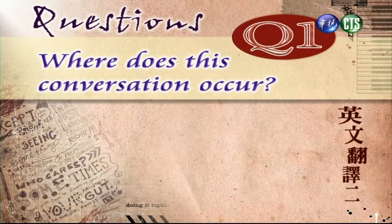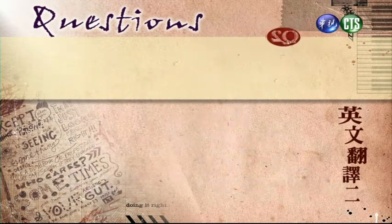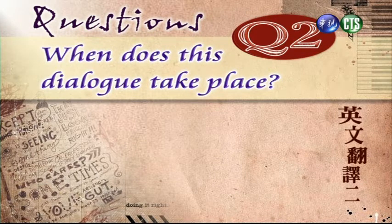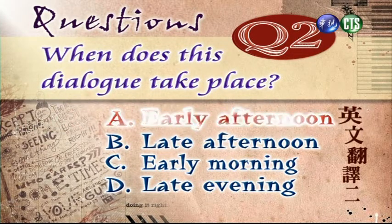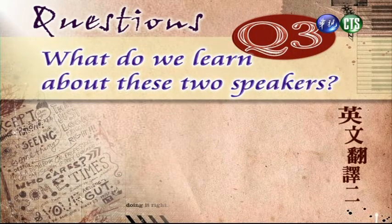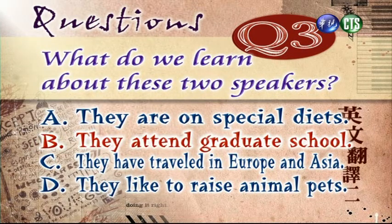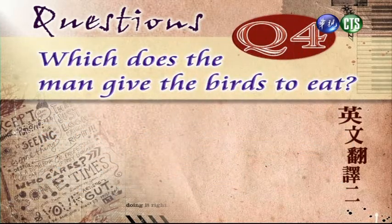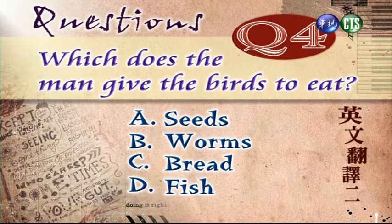Let's see what the problem is. Where does this conversation occur? A. Public Park. B. Railway Depot. C. Television Studio. D. University Campus. Answer: D, University Campus. Question 2: When does this dialogue take place? Early afternoon, late afternoon, early morning, late evening. Answer: Early afternoon. Question 3: What do we learn about these two speakers? They are on special diets / They attend graduate school / They have traveled in Europe and Asia / They like to raise animal pets. Answer: They attend graduate school. Question 4: Which does the man give the birds to eat? Seeds, worms, bread, fish. Answer: Bread.